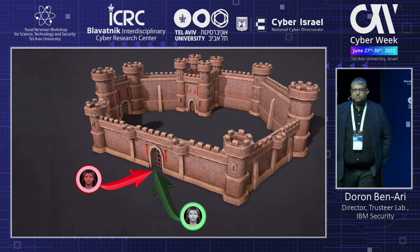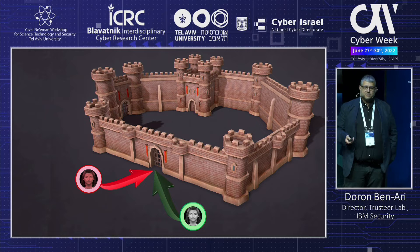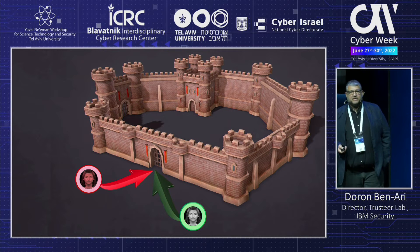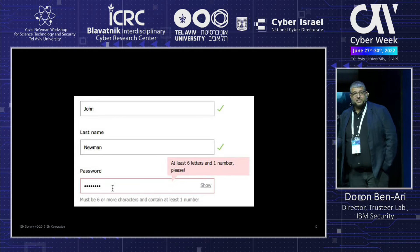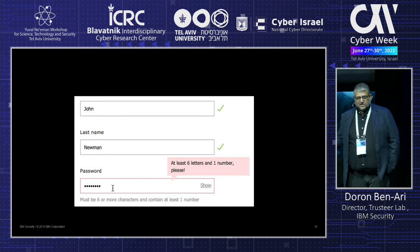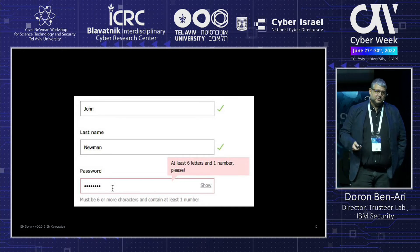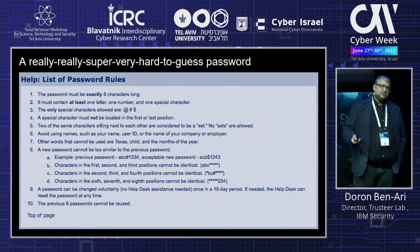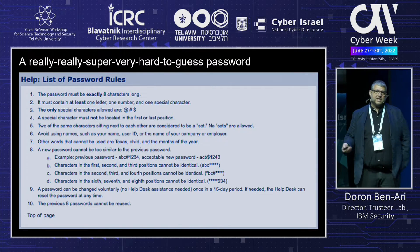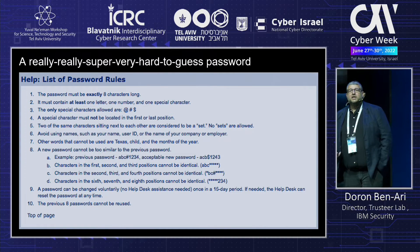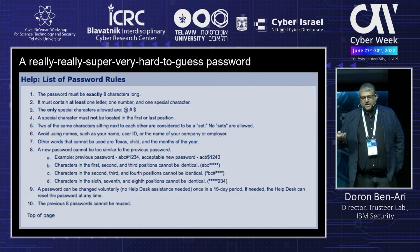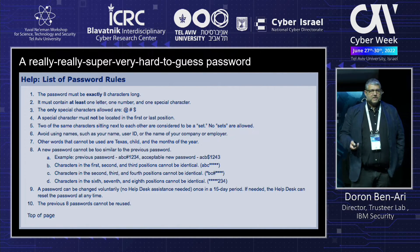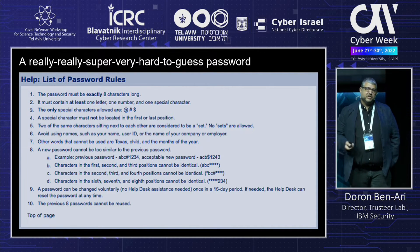The traditional approach is to put firewalls and gates and try to understand who's getting in using various methods. Put a password in — make it six letters, seven letters, really long, add a dollar sign, an exclamation mark. But we all know these don't always work. They can be bought online, they can be breached, they can be recorded.